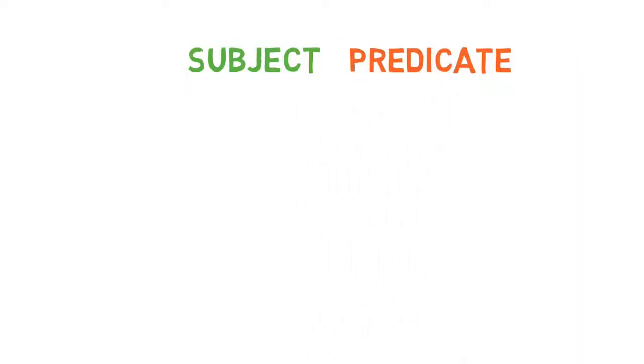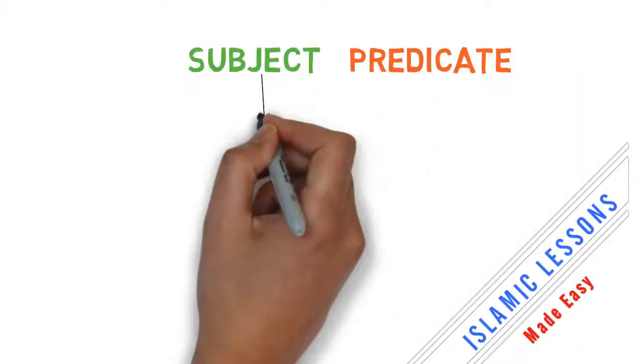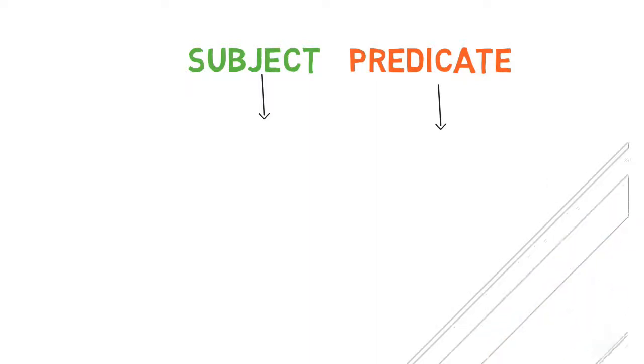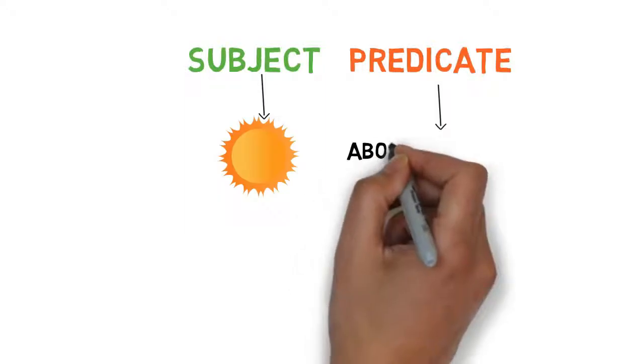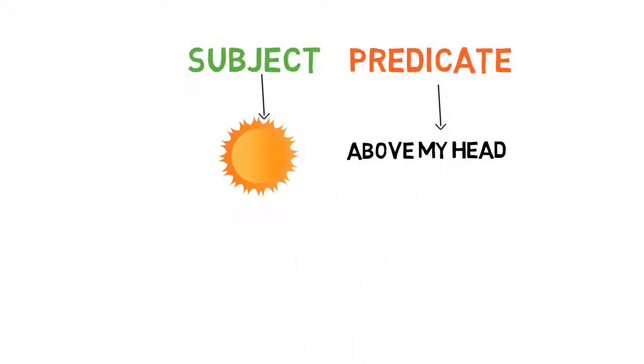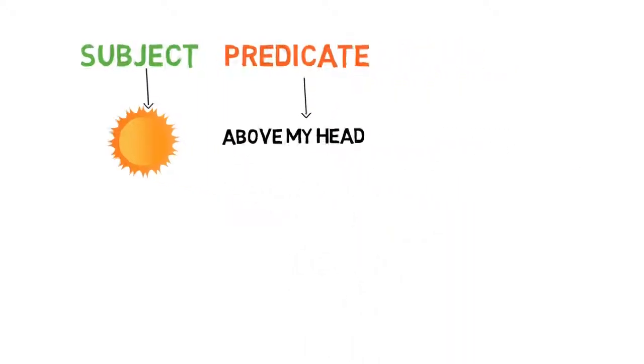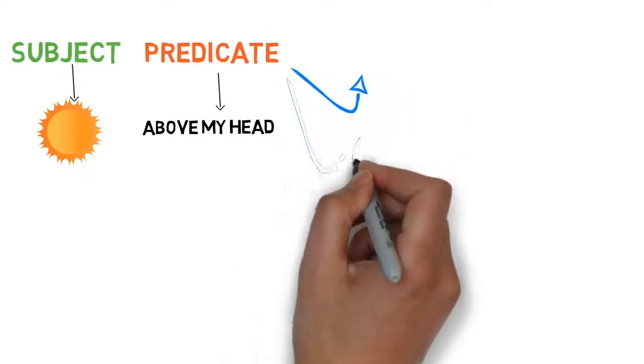A statement has two parts: a subject and a predicate. A predicate states something about the subject. If I say the sun is above my head, the sun will be the subject, above my head will be the predicate. To establish the predicate for the subject, it can only have three states.